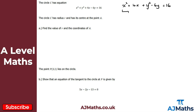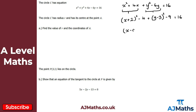Completing the square on x gives x plus 2 all squared minus 4. Then completing the square on y gives y minus 3 all squared minus 9, and this all equals 16. To get the standard form, we add 4 and 9, which is 13, to both sides.